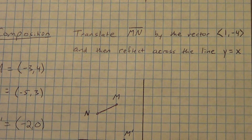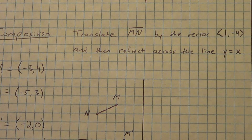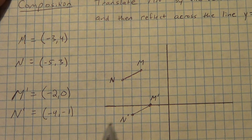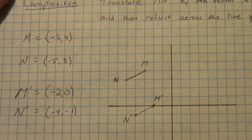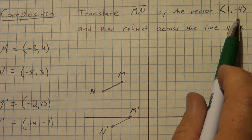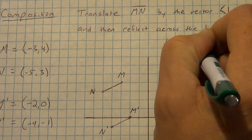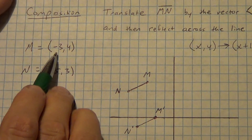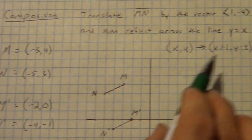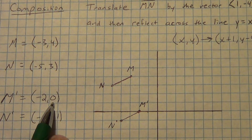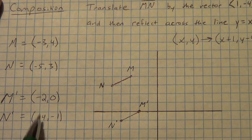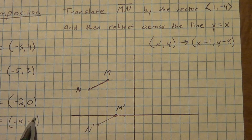N prime is at (negative 4, negative 1). Remember, the vector 1, negative 4 is the same as saying x, y maps to x plus 1, y minus 4. Adding 1 to negative 3 gives negative 2; subtracting 4 from 4 gives 0. Adding 1 to negative 5 gives negative 4; taking 3 minus 4 gives negative 1. You see how that works.